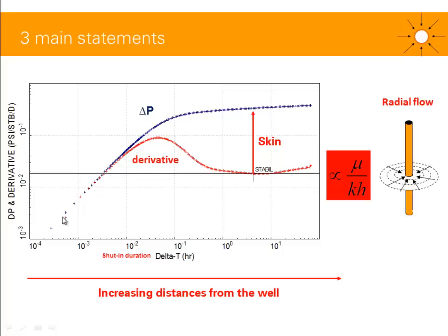For example, when you start production, production at surface is going to be due to the expansion of the fluids in the wellbore — not due to your reservoir contribution. You will have a time delay before the surface production equals the reservoir rate. Inversely, when you shut the well in, your rate at surface is zero, but your rate in the reservoir gradually decreases towards zero — there is a time delay as well. As delta T increases, you look further away in the reservoir, and you expect radial flow with a stabilization. At large delta T, you are looking even further away from the well, and you might expect to see boundaries.